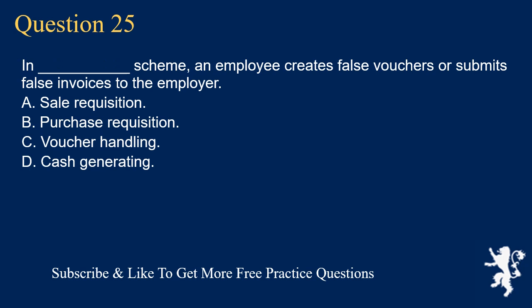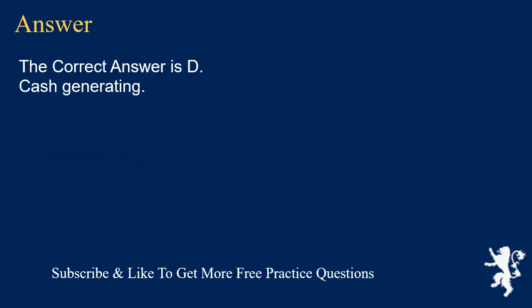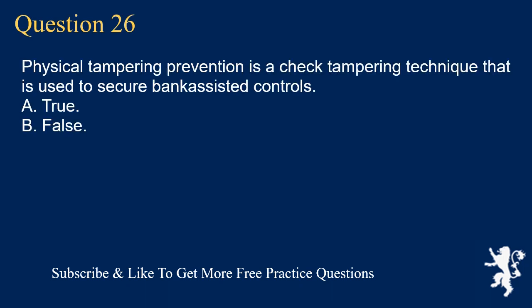Question 25: In underscore scheme, an employee creates false vouchers or submits false invoices to the employer. A. Sale requisition. B. Purchase requisition. C. Voucher handling. D. Cash generating. The correct answer is D. Cash generating.